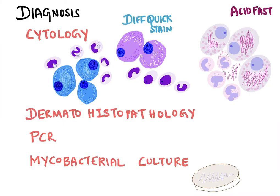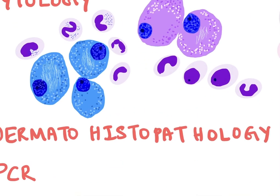Coming to the diagnosis, the best is to do an aspirate cytology. When you do an aspirate cytology after staining, you will see a lot of neutrophils, a lot of macrophages, and you can also see giant cells. You can see intracellular acid-fast bacilli if you have done an acid-fast staining. If you have done a regular Diff-Quik staining, you will see long filamentous structures that are not stained — that's because they have high lipid content around the cell wall, so they don't stain in Diff-Quik.